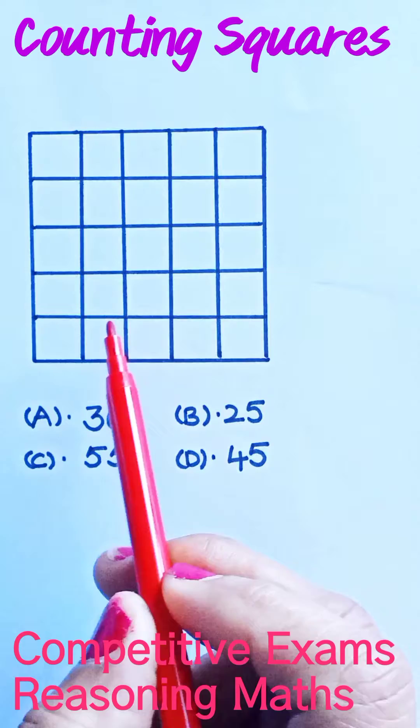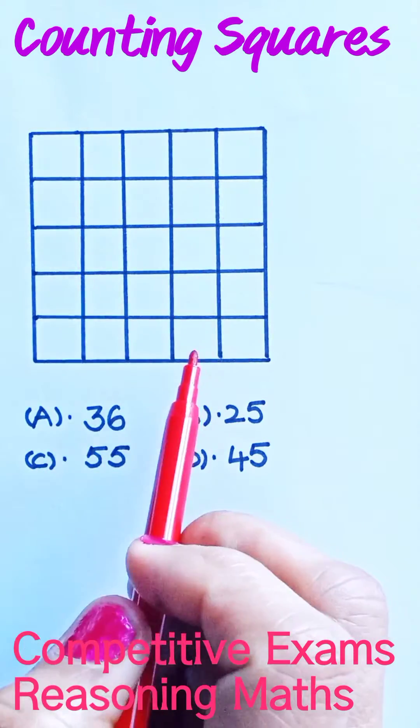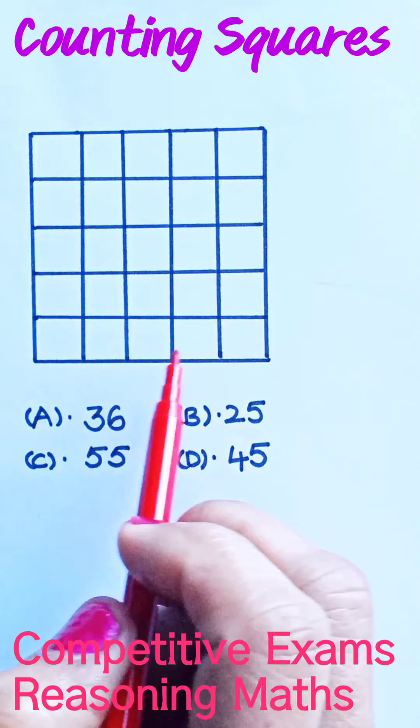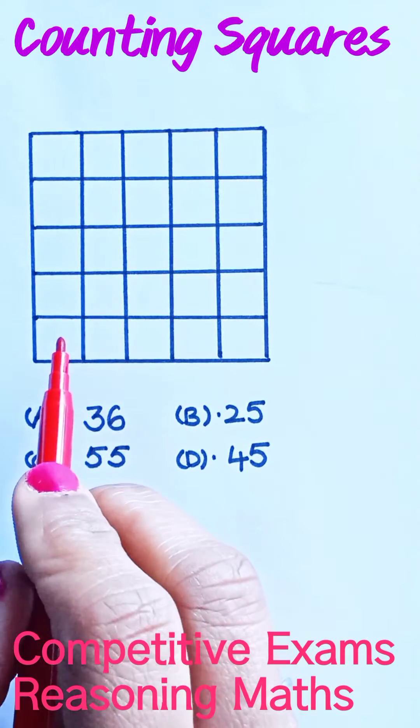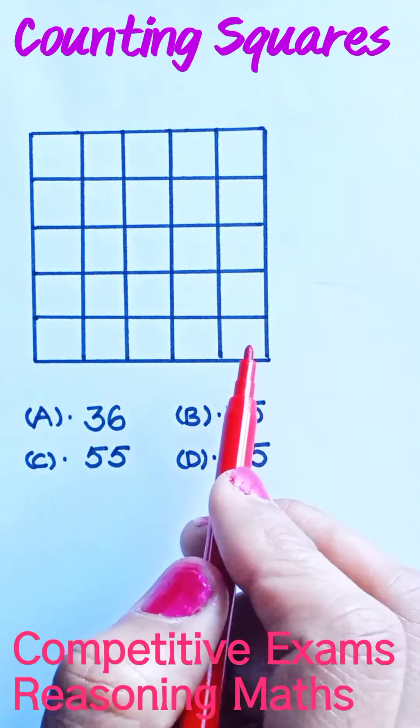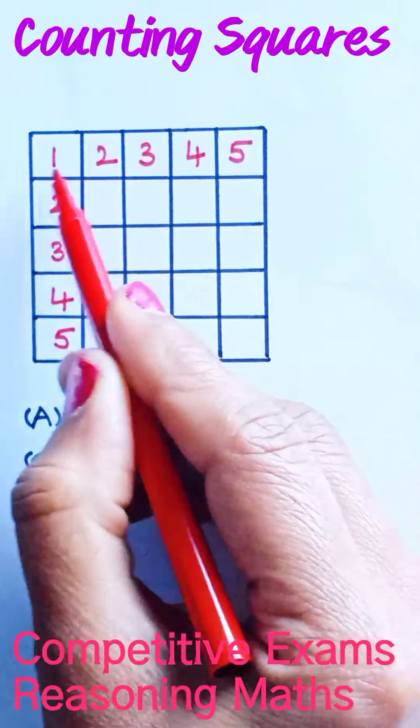Logical reasoning maths: count the number of squares present in the given figure. The given figure is a square and we need to find out how many squares are present. Before counting the number of squares, let us note how many rows and columns are there.